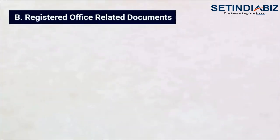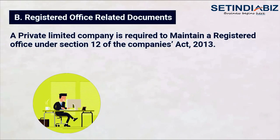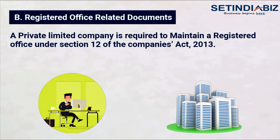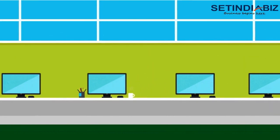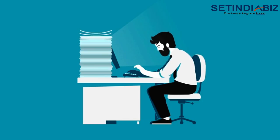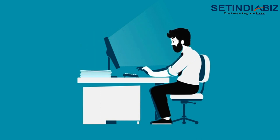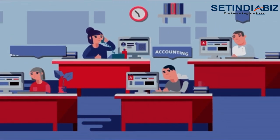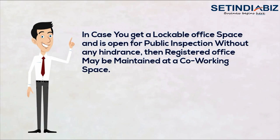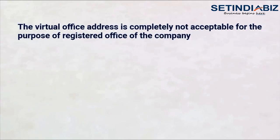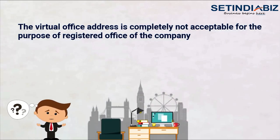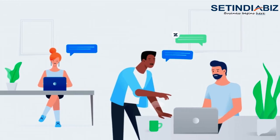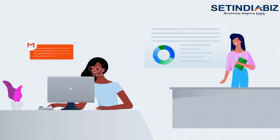B. Registered Office-related documents. A private limited company is required to maintain a registered office under Section 12 of the Companies Act 2013. The registered office has special importance as the Companies Act requires maintaining books of account and all statutory registers there. Very often we receive inquiries about whether a company can have its registered office in a co-working space. Our answer is simple: if you get a lockable office space open for public inspection without any hindrance, then a registered office may be maintained at a co-working space. A virtual office address is completely not acceptable for the purpose of a registered office. You need to arrange a physical address which shall be the registered address of the company.